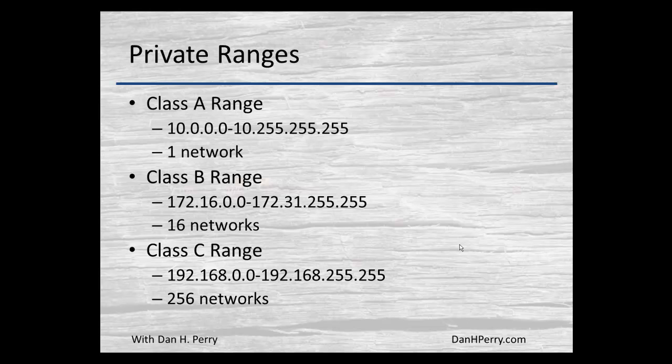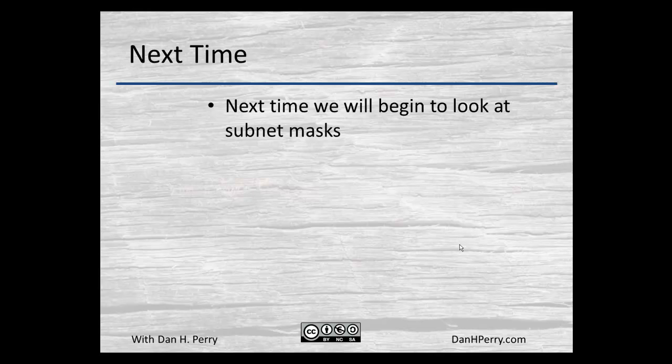The private ranges are: the 10 range — 10.0.0.0 to 10.255.255.255 — a single network. The class B range is 172.16 to 172.31, giving 16 different networks, and they can be subnetted. The class C range is the 192.168 range, giving 256 possible private networks. These can be repeated — there are hundreds of thousands of companies using class A ranges internally, and millions using the same 192.168.0.0 or 192.168.1.0 networks. Next time we'll start looking at subnet masking.